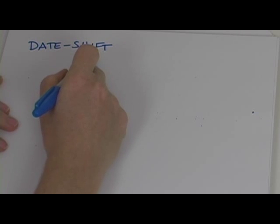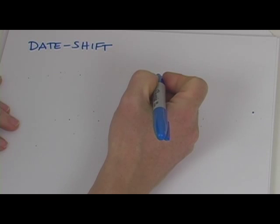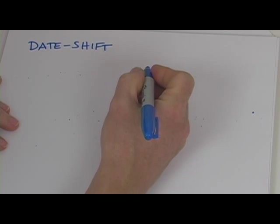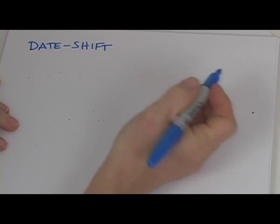Now the date shift cipher is a much harder cipher to break because you vary the amount of the shift from letter to letter.